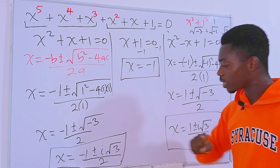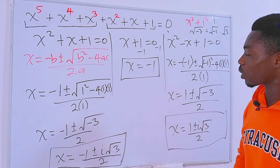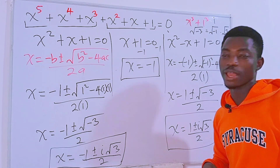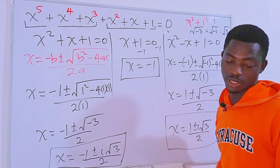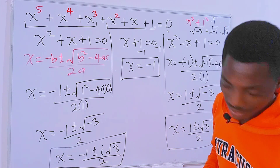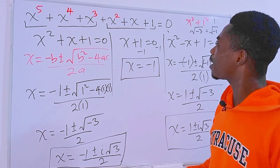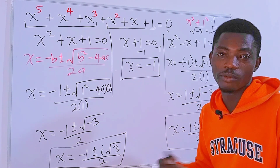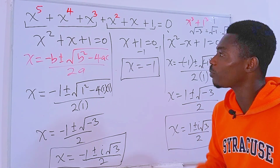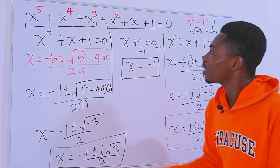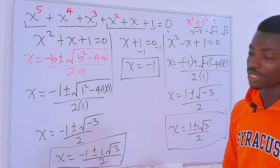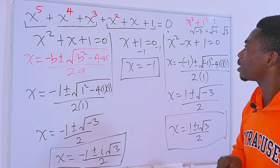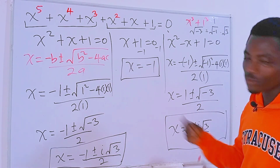So we have two solutions from the first equation, two solutions from the third equation, and one solution from the second equation — making five solutions total. This is a pretty interesting question. Make sure you subscribe or follow me wherever you are watching from — YouTube, Facebook, or TikTok. Thanks for watching!